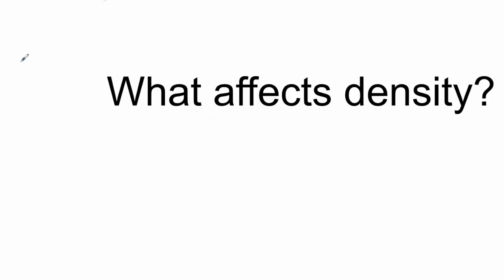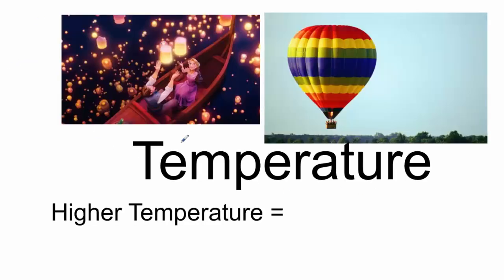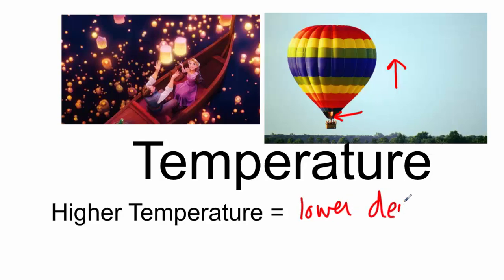What things affect density? One of the most important things in this unit is temperature. We all remember this scene from Tangled when they were lighting paper lanterns — they light the inside on fire, that air gets hot, and the lanterns begin to rise. In a hot air balloon, you have fire heating up all the air inside the balloon, and that's causing it to rise. So we know that the higher the temperature, it rises — which means it must be lower density. Hot air means lower density.